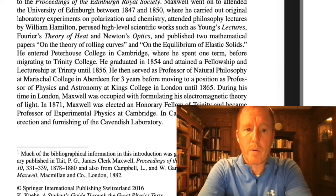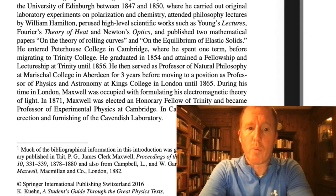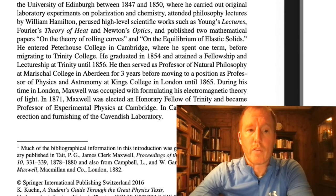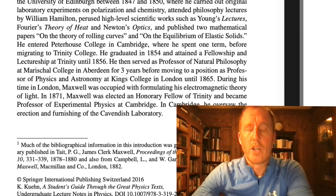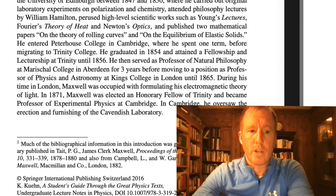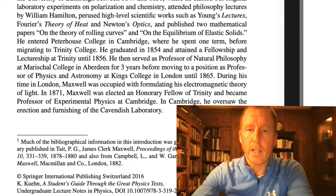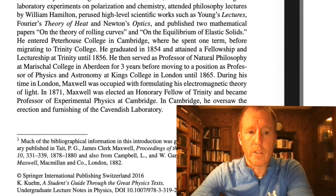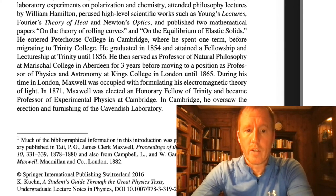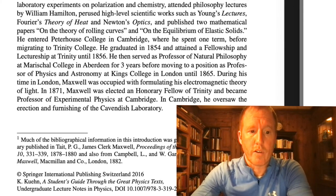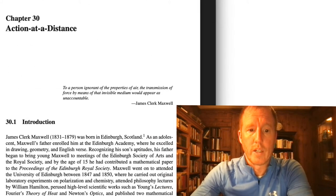He then served as professor of natural philosophy at Marischal College in Aberdeen for three years, before moving to a position as professor of physics and astronomy at King's College in London until 1865. During his time in London, Maxwell was occupied with formulating his electromagnetic theory of light. In 1871, Maxwell was elected an honorary fellow of Trinity and became professor of experimental physics at Cambridge, where he oversaw the erection and furnishing of the Cavendish Laboratory, which is still a famous scientific laboratory in England.